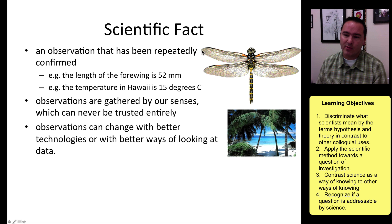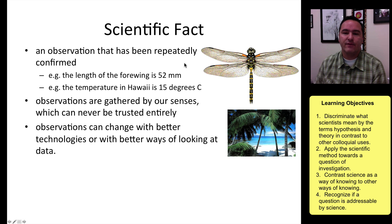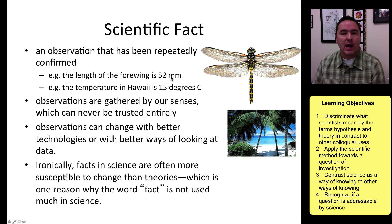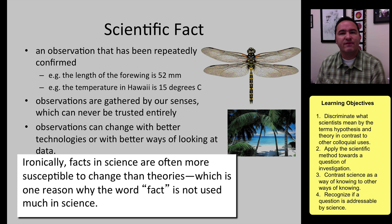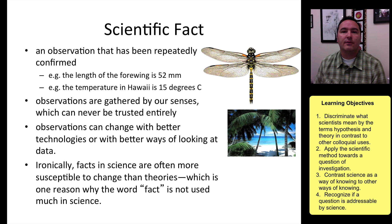For example, if I measured the forewing with a laser ruler, the actual length might be 52.001 millimeters, and so that previous fact becomes obsolete. It's ironic that in science, facts are actually more susceptible to change and to being shown not to be true than theories are.